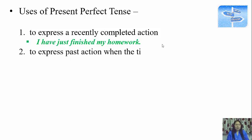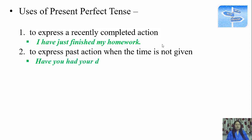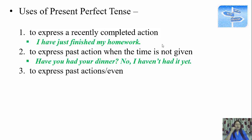The second use is to express a past action when the time is not given. If we know the time, we use simple past — for example, 'I bought this pen yesterday.' But if we don't know the time, we say 'I have bought a pen.' Example: 'Have you had your dinner?' — 'No, I haven't had it yet.' In both cases, time is not given.